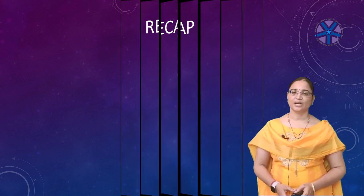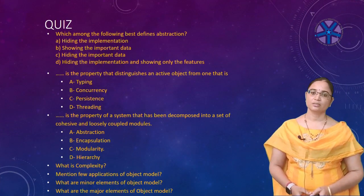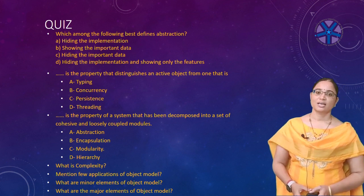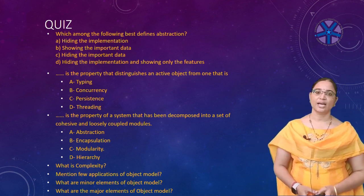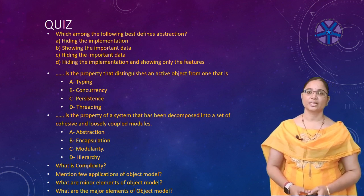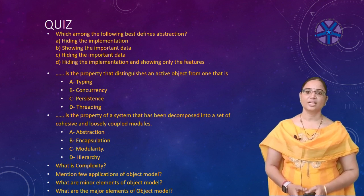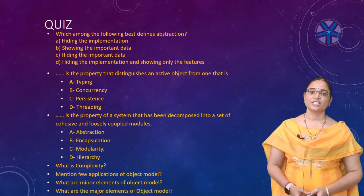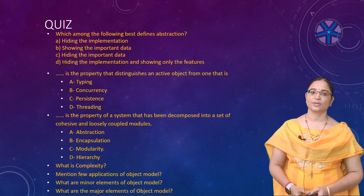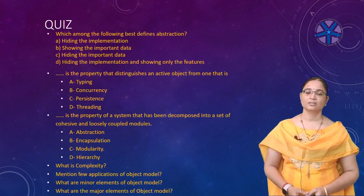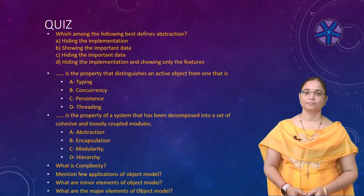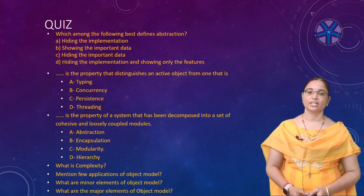Now, coming to the quiz part of the session. I have given some questions. Which among the following is the best to define abstraction: hides the implementation, showing the important data, hiding the important data, hiding the implementation, or showing the only features? Next: what is the property that distinguishes an active object from inactive objects? Next: what is the property of a system that has been decomposed into a set of cohesive and loosely coupled modules? Mention a few applications of the object model. What are the major elements of object models? What are the minor elements? If you can answer all these questions, you have understood the class well. If you have any doubts, go back and play the video.